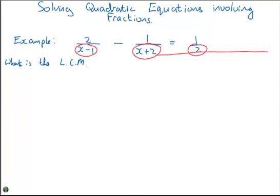If you look at everything under the line and multiply them, so I have x minus 1 times x plus 2 times 2. If we multiply everything across by this, what will happen is the fractions will cancel and we'll be left with a simpler problem.